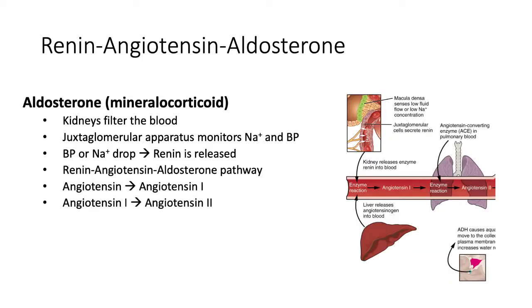This is the start of the pathway. Renin is a hormone which is also an enzyme. Once released into the bloodstream, it circulates throughout the body. Its action is to convert angiotensin, a protein produced by the liver which is normally inactive in the blood, into angiotensin 1.